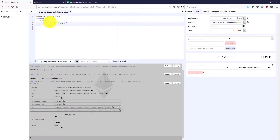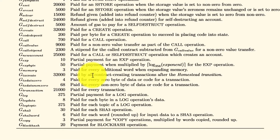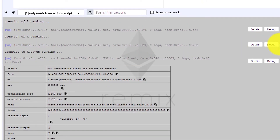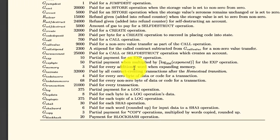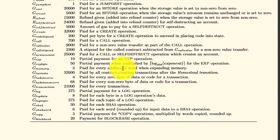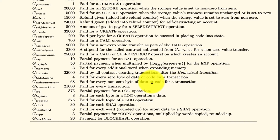Looking at Appendix G: GTransactionCreate is paid by all contract-creating transactions after the homestead transition — this applied when we created the contract, but not for further transactions. GTransactionData0 is paid for every zero byte of data or code in a transaction. GTransactionDataNon0 is paid for every non-zero byte. And GTransaction is 21,000 paid for every transaction.